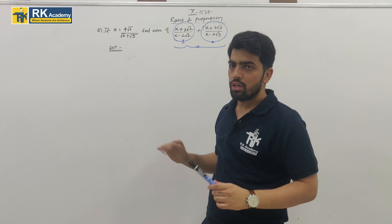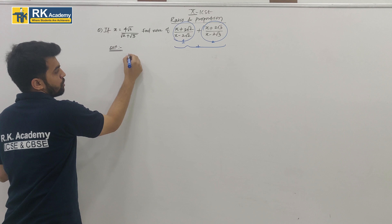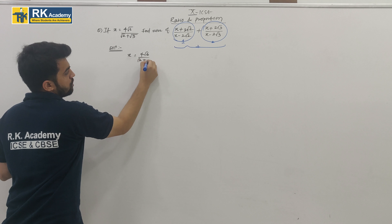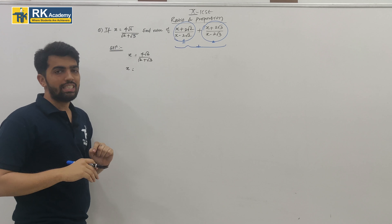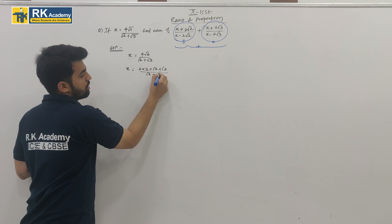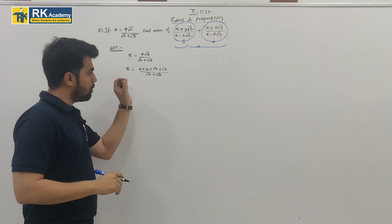Let's do the first step. We are given x = 4√6 / (√2 + √3). Now factorize 4√6: write 4 as 2×2, and √6 as √2×√3. So x = (2√2 × 2√3) / (√2 + √3). Now, dividing both sides, x/(2√2) = 2√3 / (√2 + √3). This is a very important step.